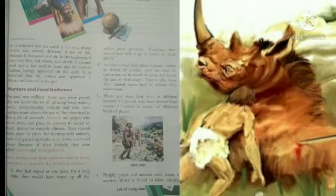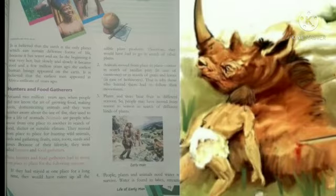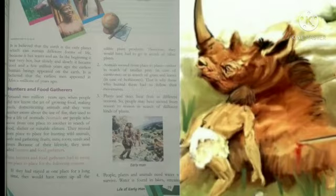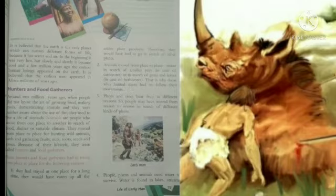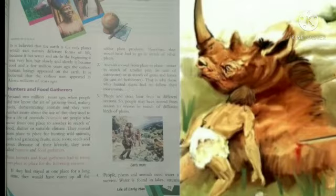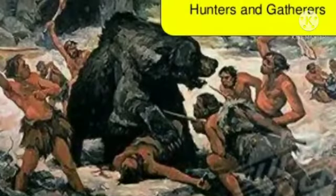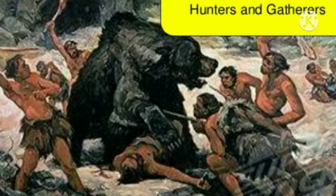Animals went from place to place either in search of smaller prey, in the case of carnivores, or in search of grass and leaves. That is why those who hunted them had to follow their movements. Animals move to different places, and food is found in different places.